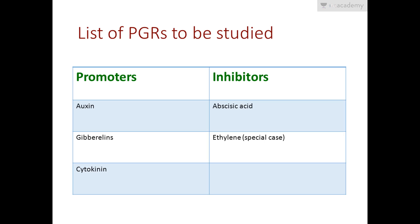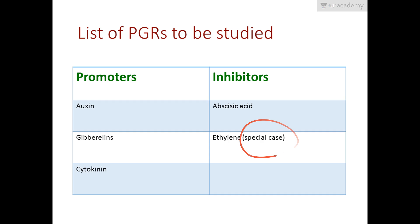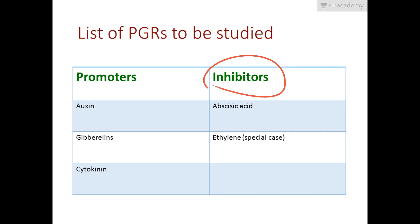Here is the list of PGRs to be studied, divided into two columns as promoters and inhibitors. In the promoters column: auxin, gibberellins, and cytokinin. In the inhibitors column: abscisic acid and ethylene, which is a special case. Our NCERT book says ethylene can fit into either group, but it is largely an inhibitor than a promoter in its activities, so we have placed it under inhibitors.